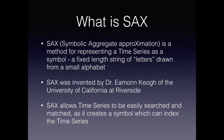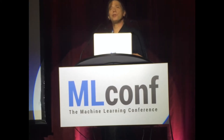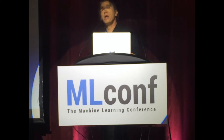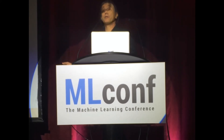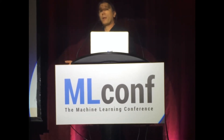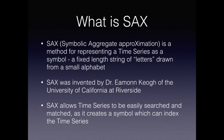It produces a fixed string of letters drawn from a small alphabet. In our examples here, we'll use a three-letter alphabet with an eight-letter SAX word. SAX was invented by Dr. Keogh at the University of California at Riverside around 2002, along with his team of graduate students, and has been in the academic community quite vigorously ever since, although not many commercial applications have been found for it just yet.